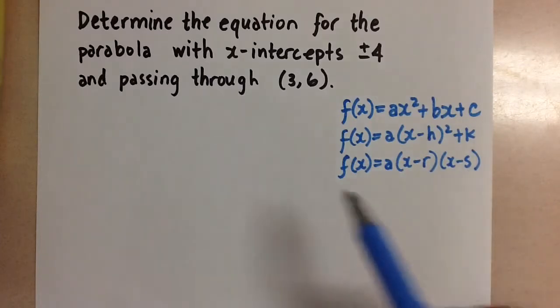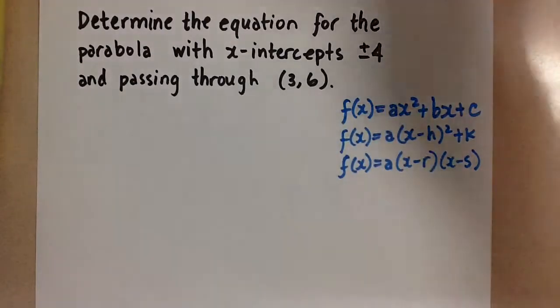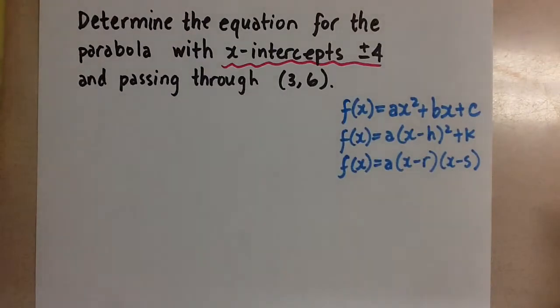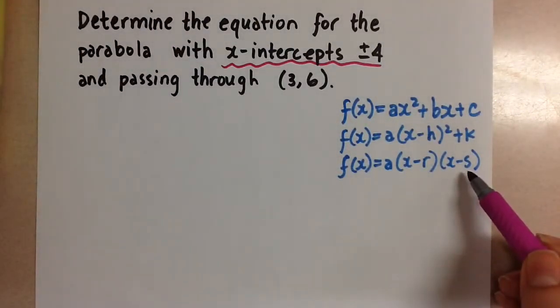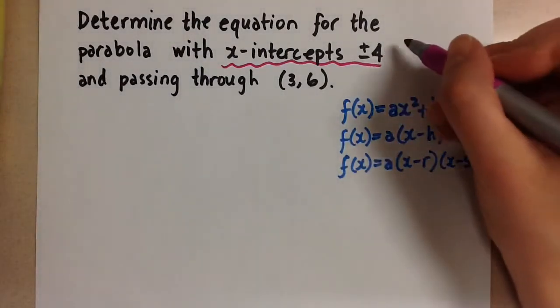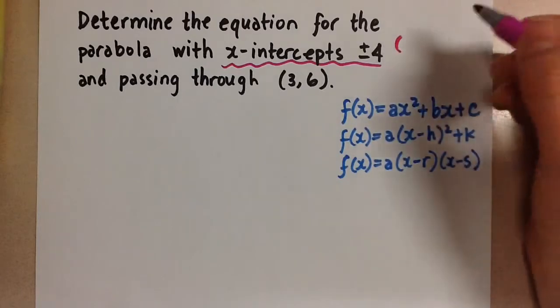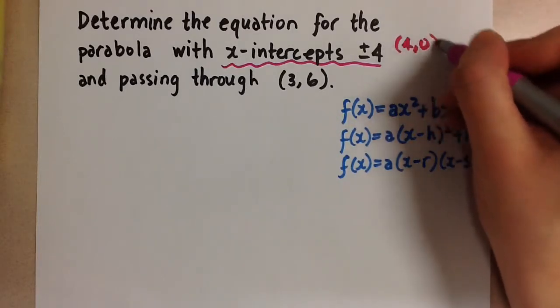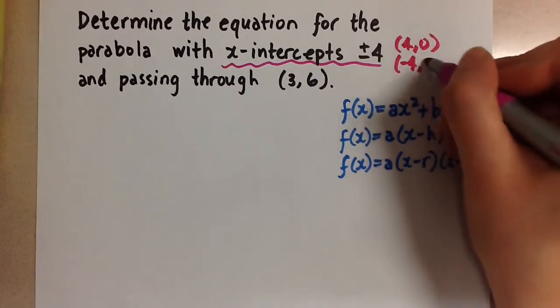So for this question, since they are giving us the x-intercepts here, we're going to use the factored form of the equation. So this here means that our roots, or zeros for this parabola, are 4, 0, and negative 4, 0.